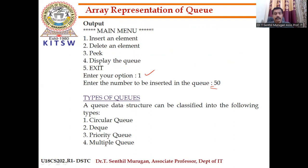There are multiple types of queues: circular queue, deque (double-ended queue), priority queue, and multiple queue. These topics will be discussed in further videos.